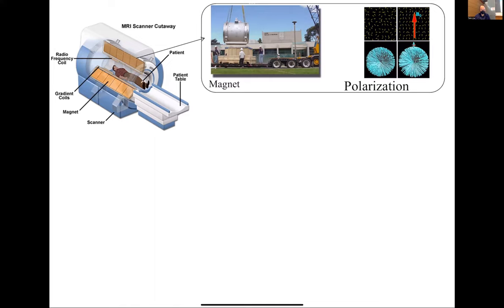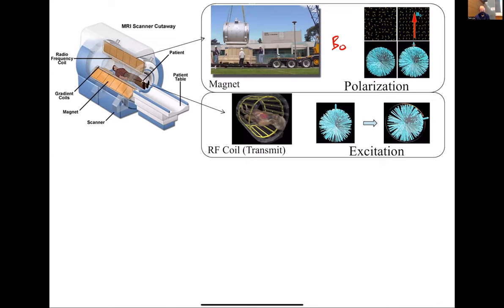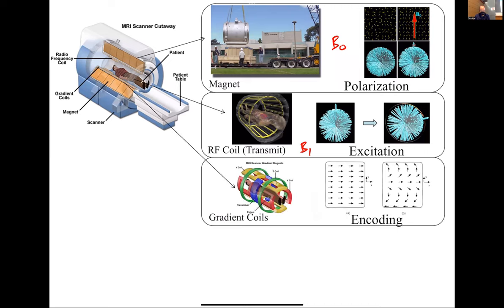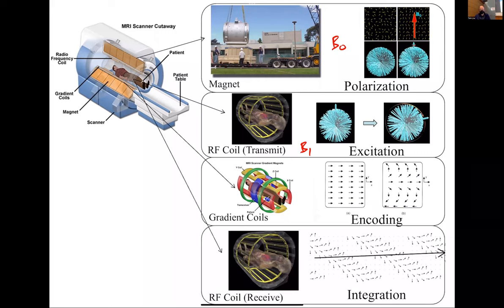So let's review where we are. We talked about the big magnet, which is polarization — this is the B0 field. We talked about the transmit RF field, which is the B1 field. And we're going to spend most of our time today on gradient coils, which is encoding. Remember, this is trying to introduce gradients in frequency or phase — not gradients in polarization. Some people on the pre-lecture quiz picked polarization, but it's frequency or phase. We'll get to integration at a later time. So basically today we're on the third part, which is encoding.